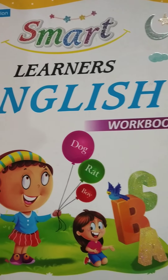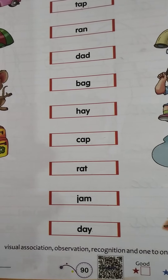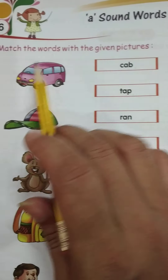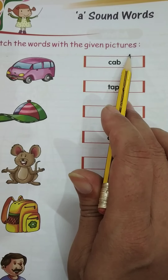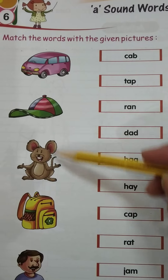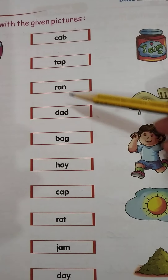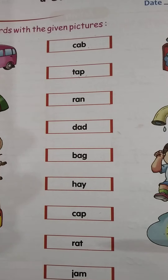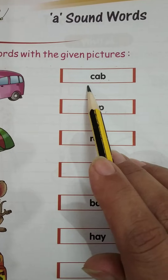This is your English workbook — Smart Learner English workbook. Open your book, page number 90. In sound words. Match the words with the given pictures. This side has pictures and another side has pictures, and in between are words. You have to read the words and match the pictures.